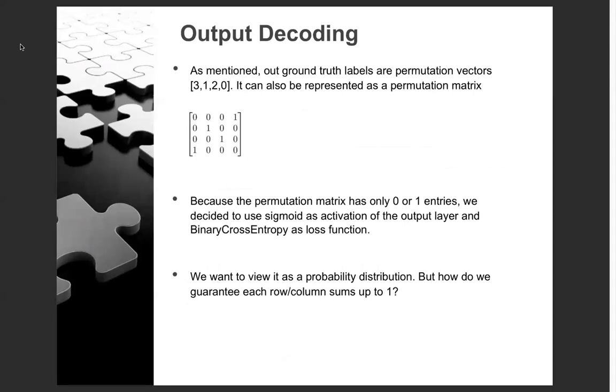Once we get outputs from the final layer, we need to decode the output. As mentioned, the permutation matrix has only 0 or 1 as entries. This allows us to use sigmoid as activation of the output layer, which guarantees our outputs live between 0 and 1. Because of this, we also chose binary cross-entropy loss. But how do we guarantee that each row and column sums up to 1?